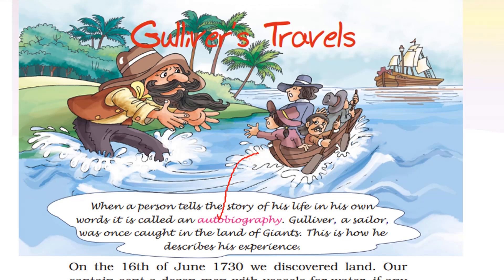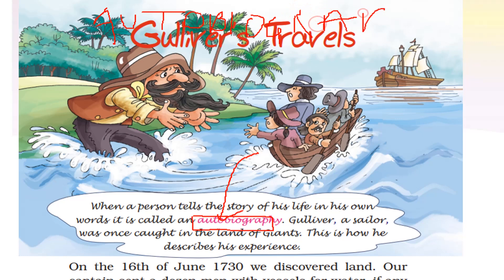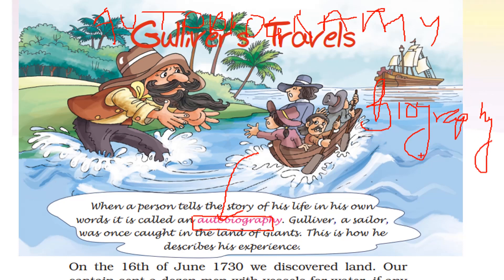Here we can see the word autobiography. What is the meaning of autobiography? A-U-T-O-B-I-O-G-R-A-P-H-Y. The other word is biography. Autobiography means if I myself am writing my experiences in the form of a book, that is known as autobiography, and someone else writes my experiences, that is known as biography.